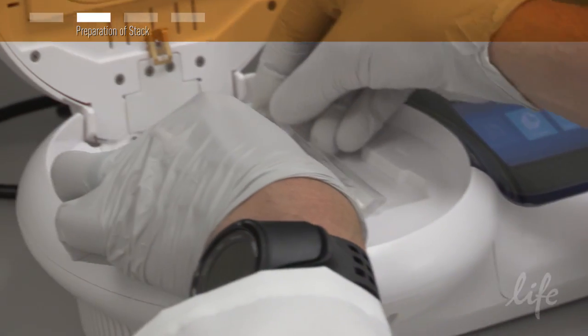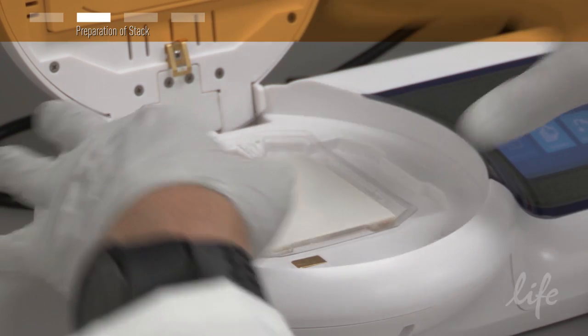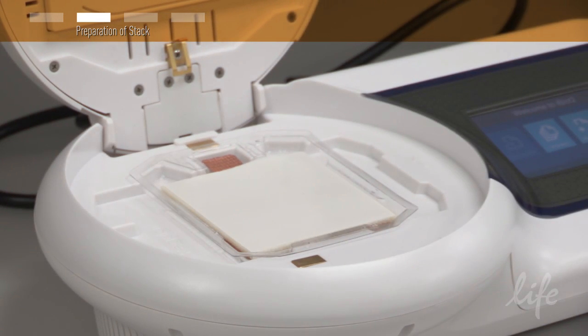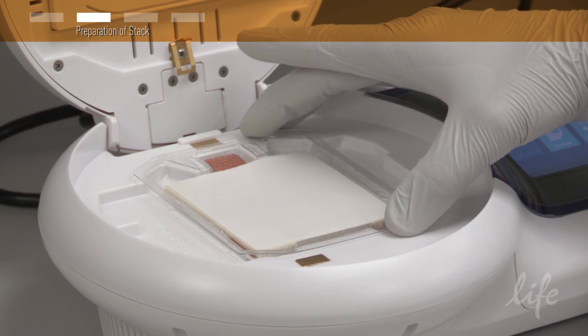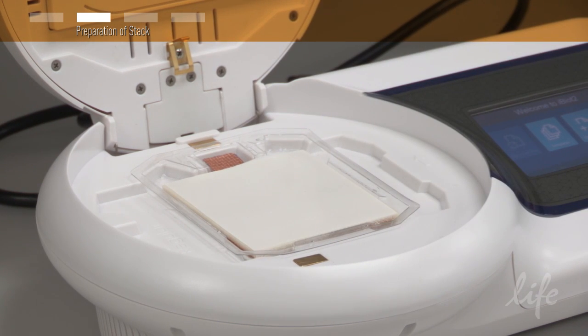Then, place the tray on the blotting surface of the iBlot2. Be sure to align the electrical contacts on the tray with the corresponding contacts on the blotting surface.